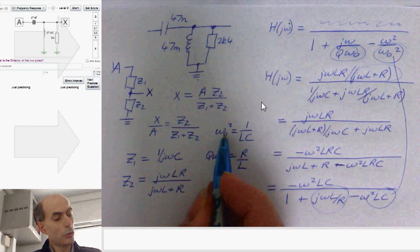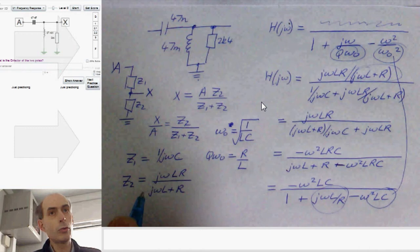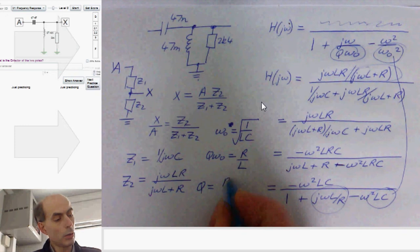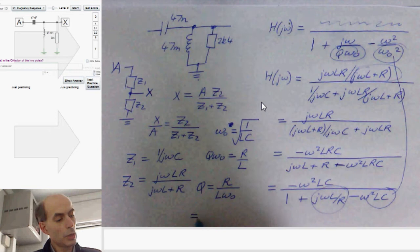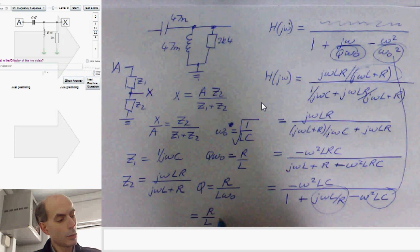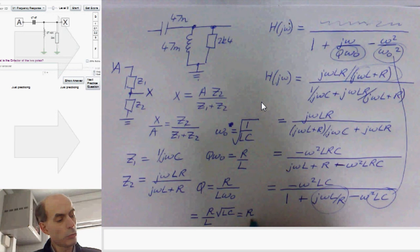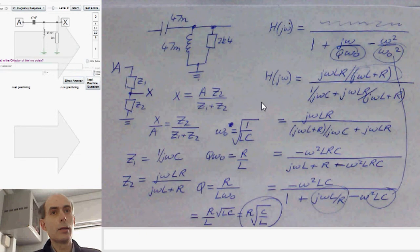Therefore, Q must be R divided by L times ω₀, which is just equal to R over L times the square root of LC, which would be R times the square root of C over L. And that is the expression I need to work out my Q-factor.